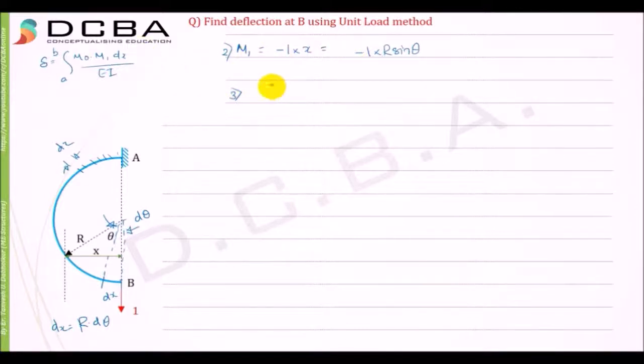Now we can substitute in this formula. Delta is equal to, now our parameter is theta. When theta equal to zero, your theta is zero, and then it has to travel 180 degrees, or it is equal to pi. So theta will be equal to zero to pi. M0 is minus w r sin theta.